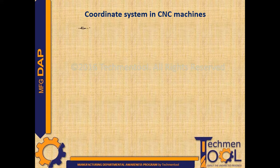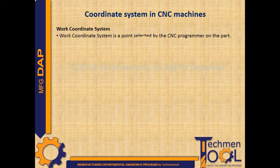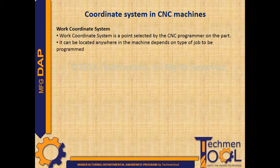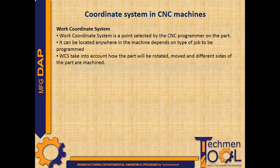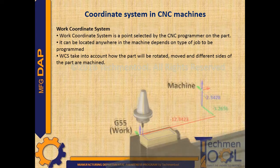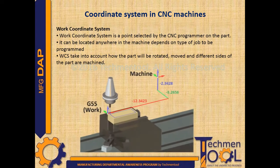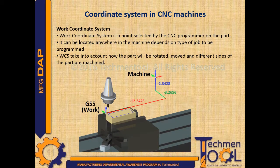Work coordinate system: the work coordinate system is a point selected by the CNC programmer on the part. It can be located anywhere in the machine depending on the type of job to be programmed. The work coordinate system takes into account how the part will be rotated, moved, and different sides of the part are mentioned.